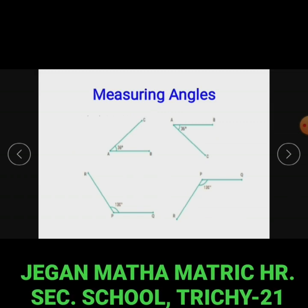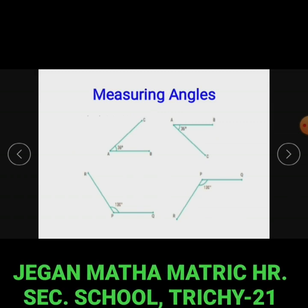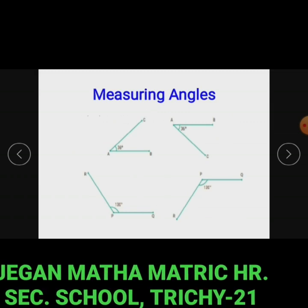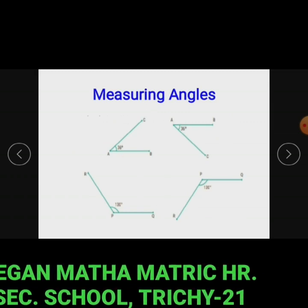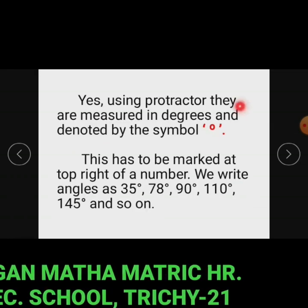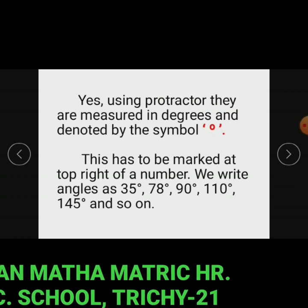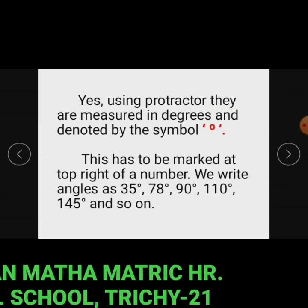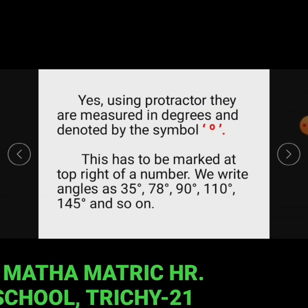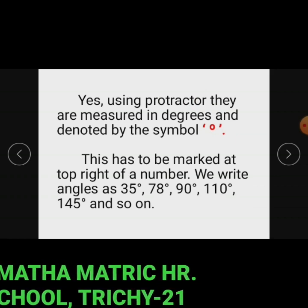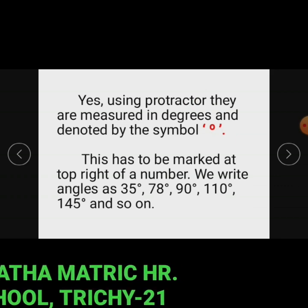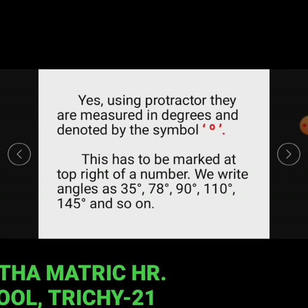Measuring angles: can we measure angles? Yes, using a protractor. They are measured in degrees, denoted by the symbol degree written at the top right of a number. We write angles as 35°, 78°, 90°, 110°, 145°, and so on.